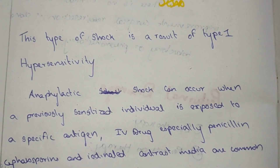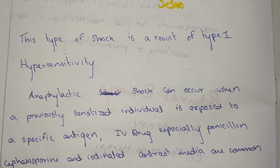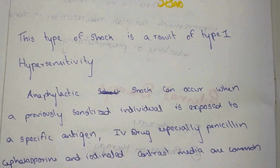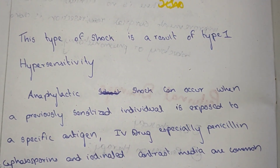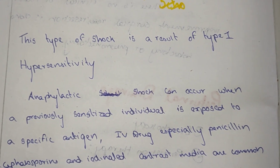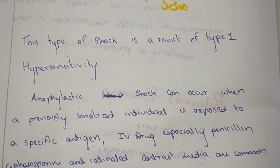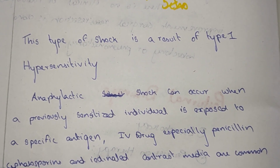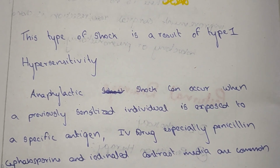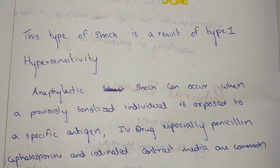Anaphylactic shock can occur when a previously sensitized individual is exposed to a specific antigen. Common triggering agents include IV drugs, mostly penicillin, cephalosporin, and iodinated contrast media.